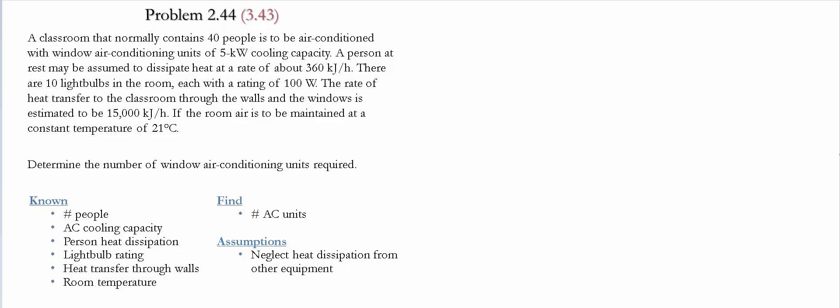We want to maintain the temperature of the room at 21 Celsius and we need to determine the number of window air conditioning units required to maintain that temperature. In the assumptions, we're going to neglect the heat dissipation from other equipment, such as computers and any other devices that might be present in the classroom.